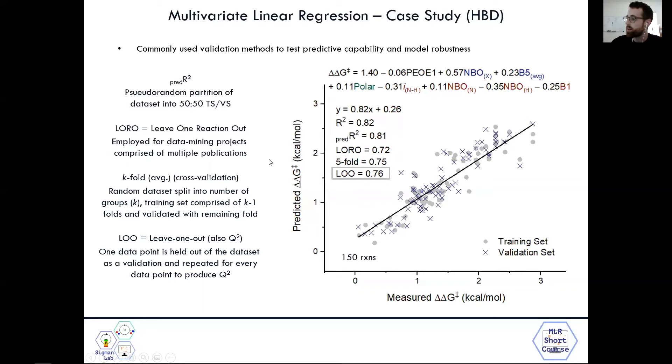And then finally, the LOO, which is leave one out, which is also sometimes referred to as Q-squared. And this validation method, one data point is held out of the data set as a validation and repeated for every data point to produce the Q-squared. So in this one, one data point is removed and then predicted, and it's just repeated over and over again for every data point that is in the data set. And then the resulting R-squared is called Q-squared, and that would be your validation score. So for this one, we have an LOO of 0.76, which relative to our model fit is a pretty good score. And what we like to see typically in our modeling process is we like to see an LOO which is not too far away from our R-squared. And we also like to see a K-fold which is not too far away from our LOO. And this means that we have a pretty robust model. And it's alluding to the fact that it has some predictive capability potentially, which we will explore later.